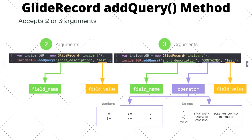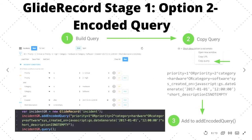Below are two lists of operators you can pass. For number fields you can use operators like greater than or greater than or equal to. For string fields you can use operators like CONTAINS or STARTSWITH. In this example we are saying: does the short description contain the word 'test'? Note that if you only pass two arguments to addQuery, an equality operator is assumed by default.